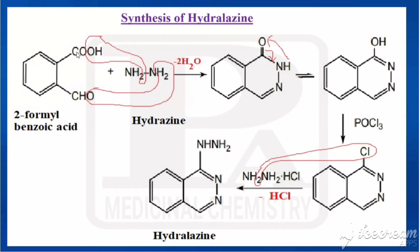We already know what benzoic acid is — a benzene ring with a COOH group. That is benzoic acid, with position one being the carboxylic acid. In the second position, an aldehyde group is attached; this addition of a formyl group is called formylation. Since the formyl group is attached at the second position, it is called 2-formylbenzoic acid.